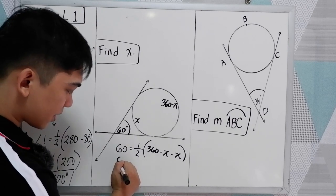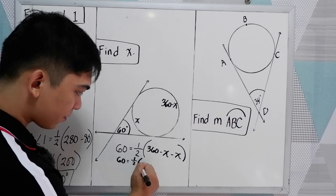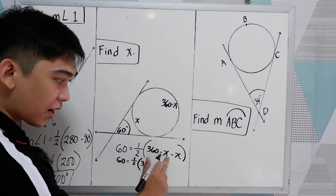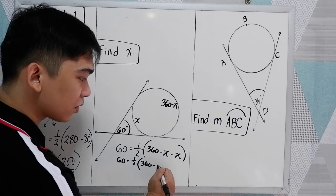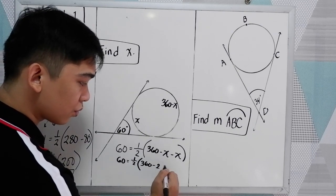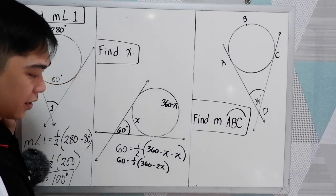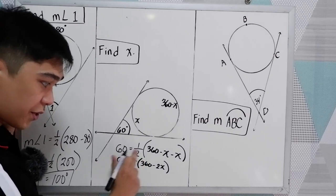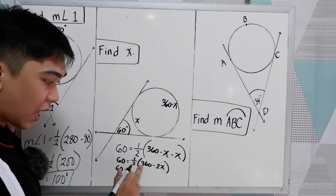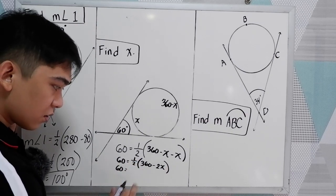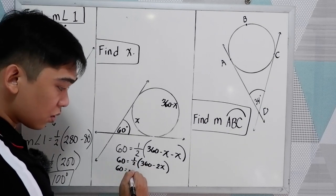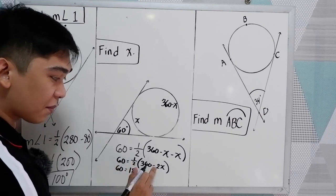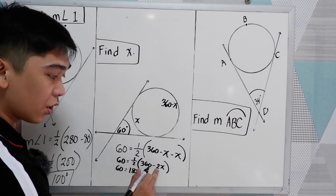So we have 60 is equal to one-half of 360, negative x minus x, that is negative 2x. Now we have 60 is equal to, distribute, so one-half times 360, basically that is 360 divided by 2, so 180, minus one-half times negative 2x, that is negative x.